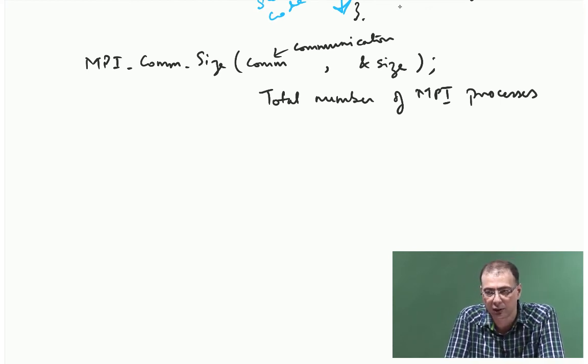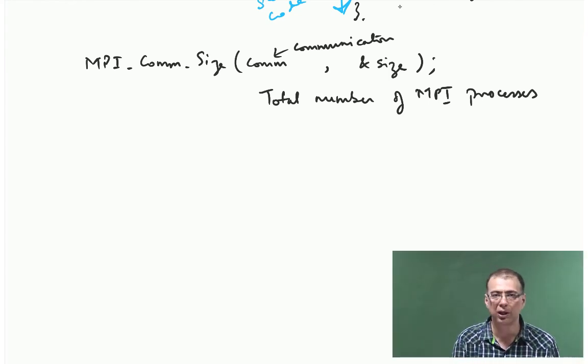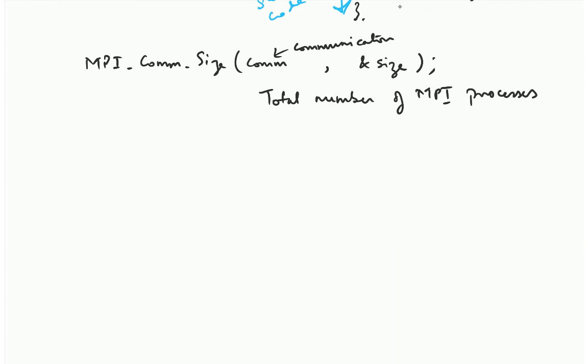The idea is that you write your code independent of how you launch it. Depending on the system that you are running on you may launch with 4 processes, 10 processes and so on. But your code should ideally be independent of that. It should figure out what is the total number of ranks and then distribute the work accordingly.